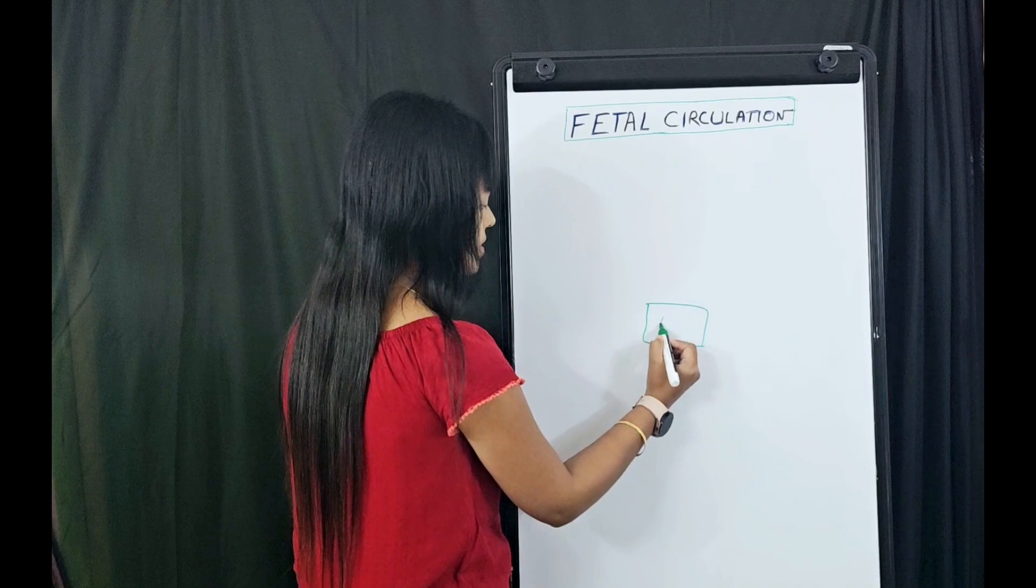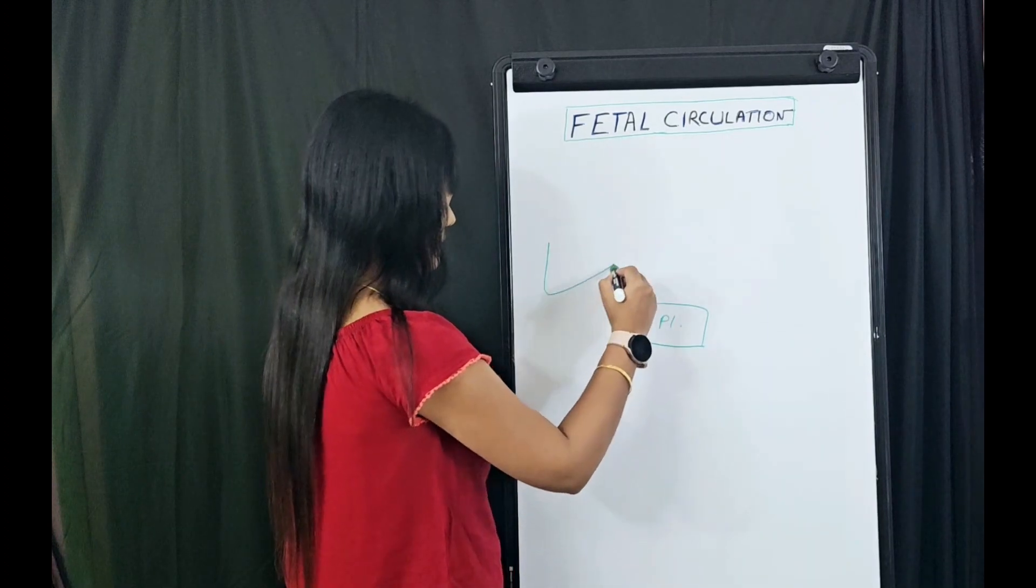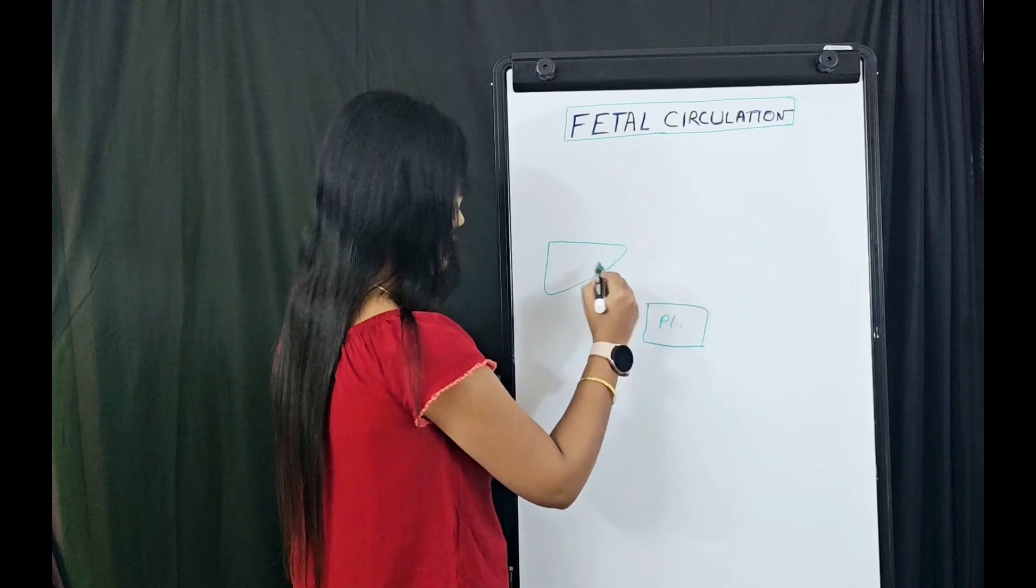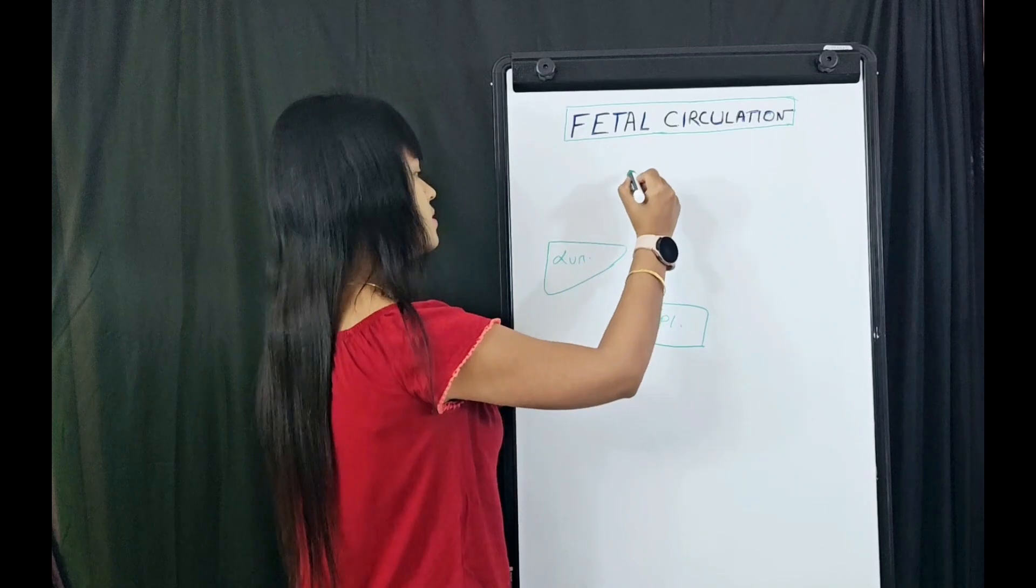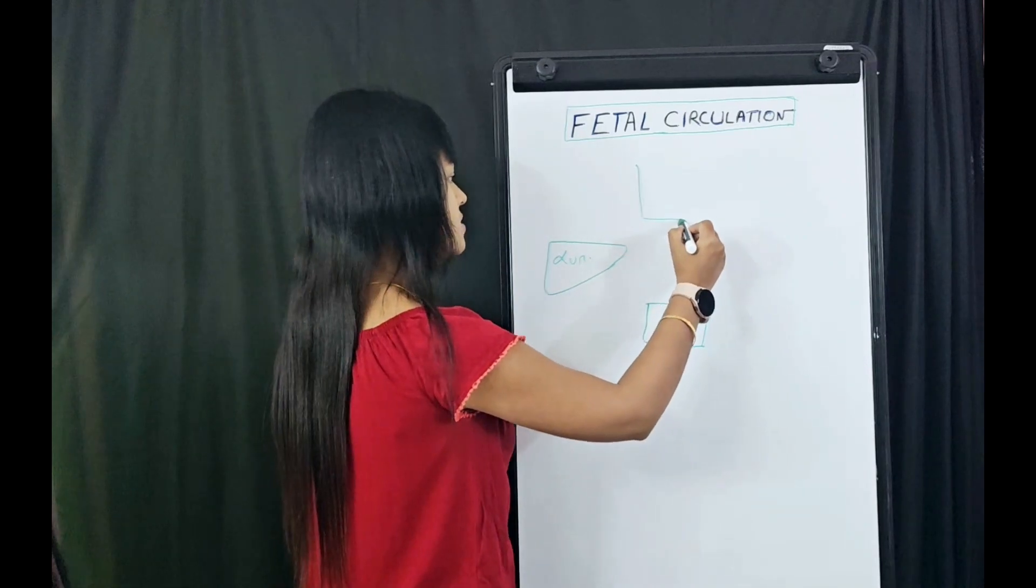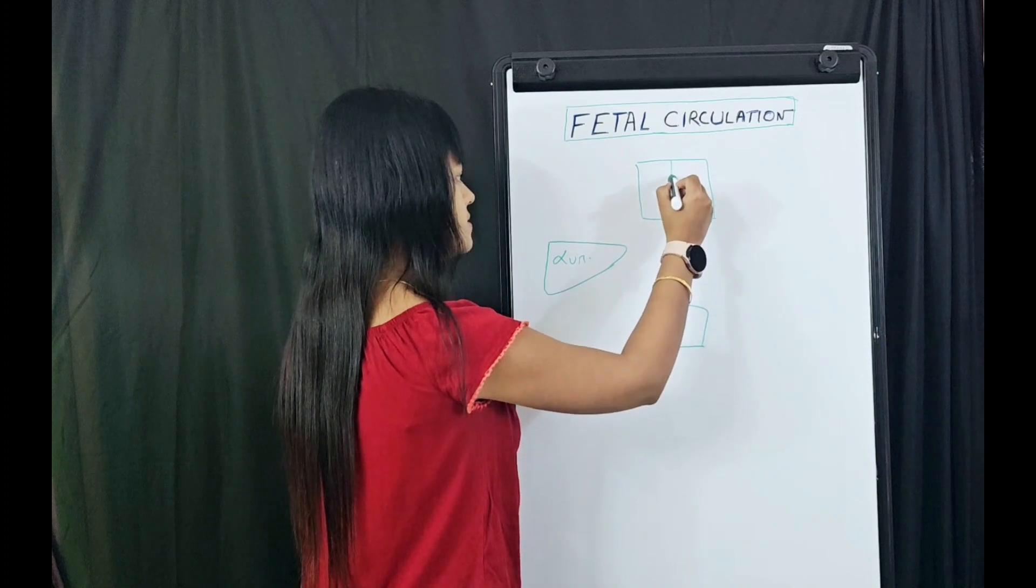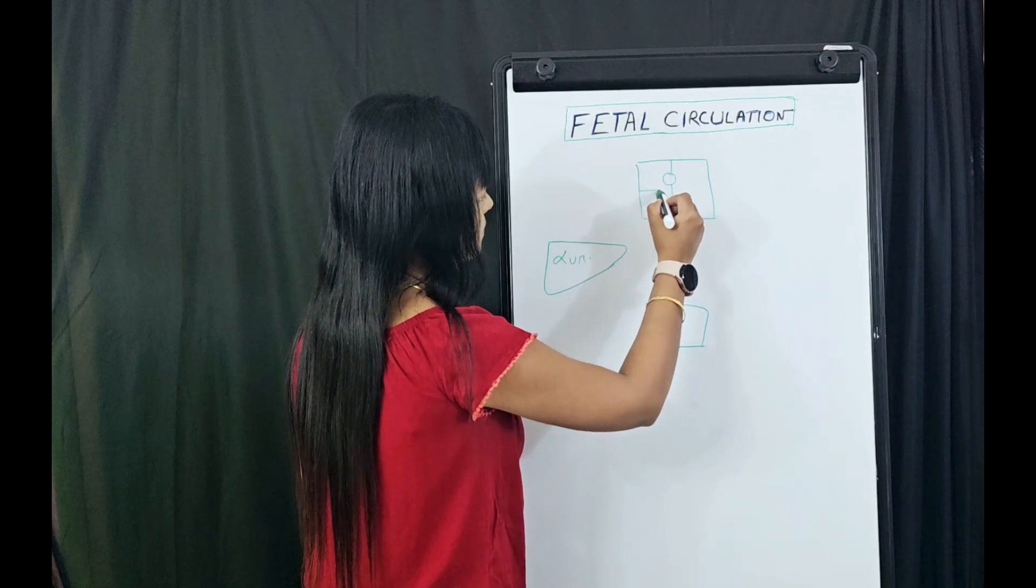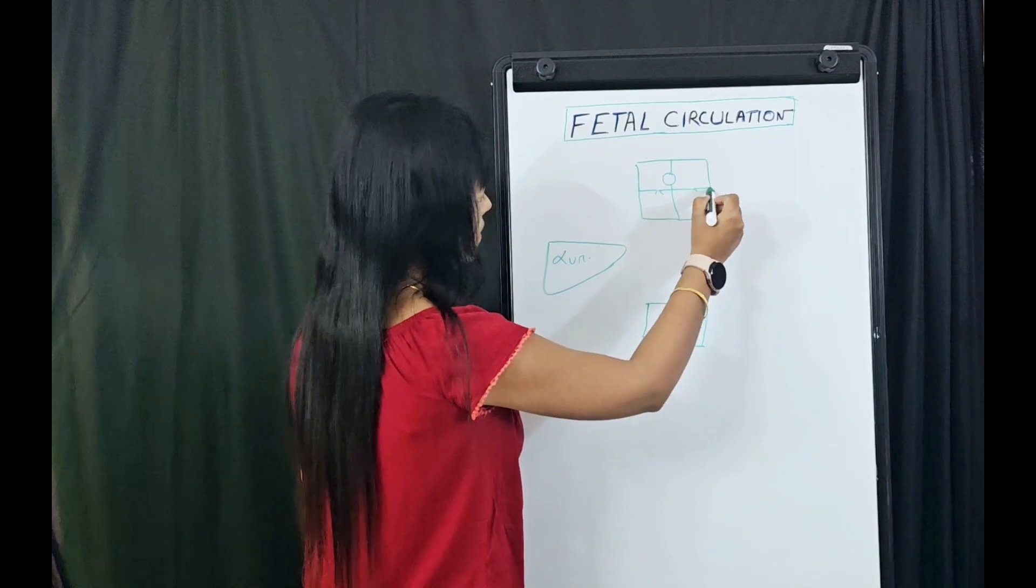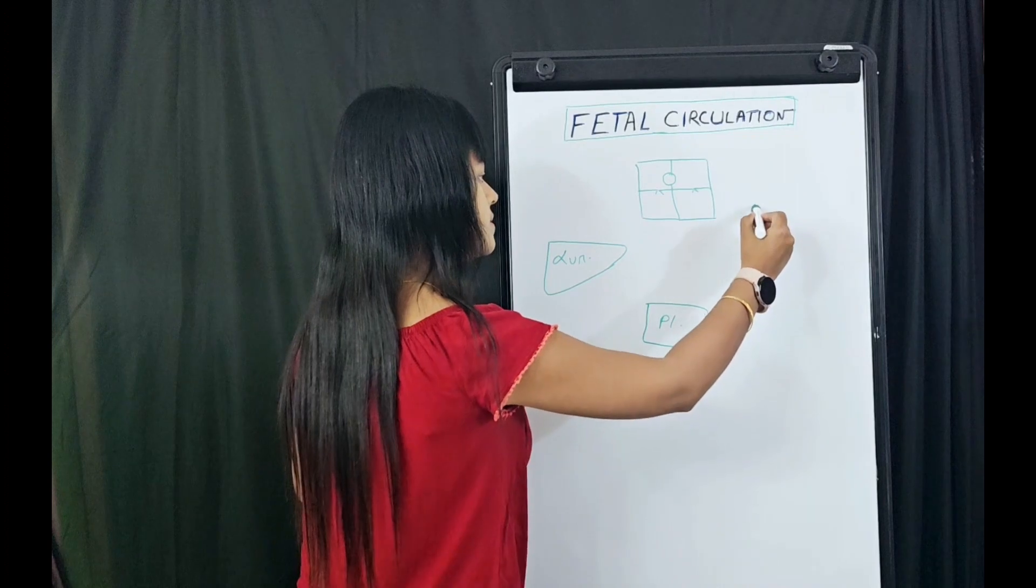First, make four important organs. Draw with me, students. This one is the placenta. Next, this one is the liver. Next, you make the heart along with me, a four-chambered heart. And the last is lungs.